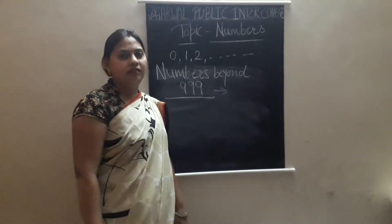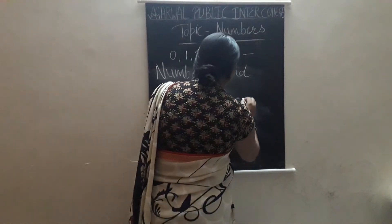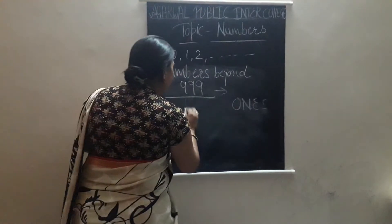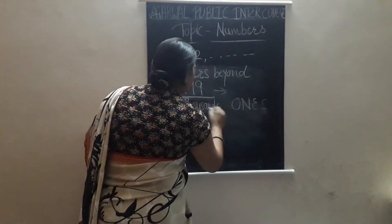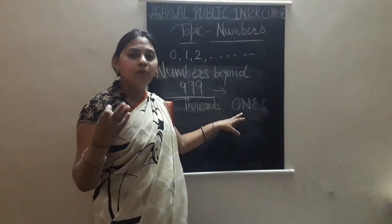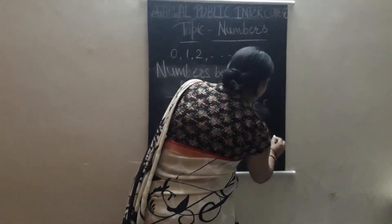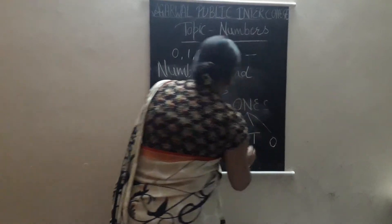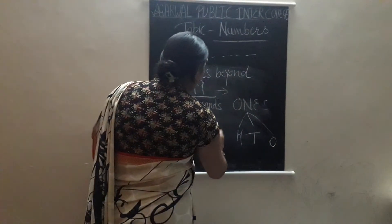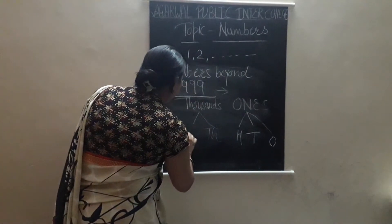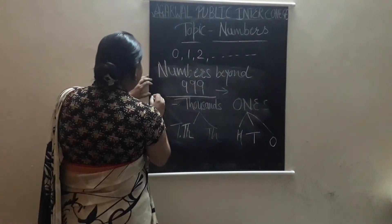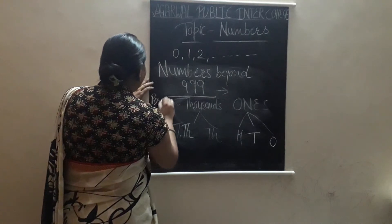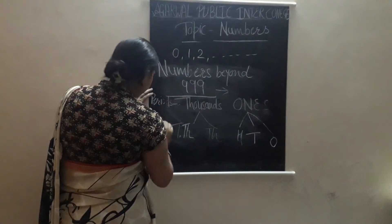To understand the numbers beyond 999, we have used 2 periods. The 1st period is 1s, and the 2nd period is 1000s. In the 1s period we have 3 places: 1s, 10s, and 100s. In the thousands period we have two places: thousands and ten thousands. This is periods and this is places.